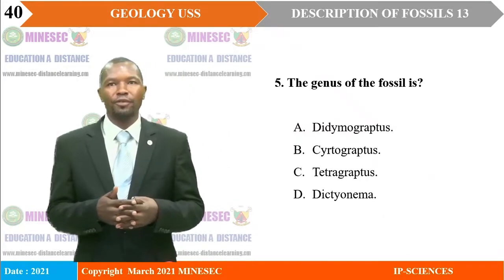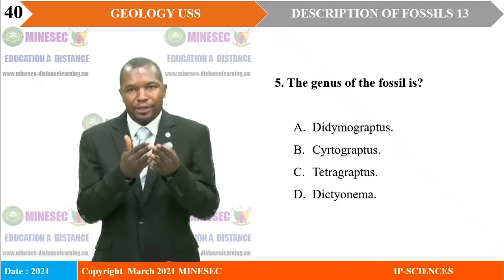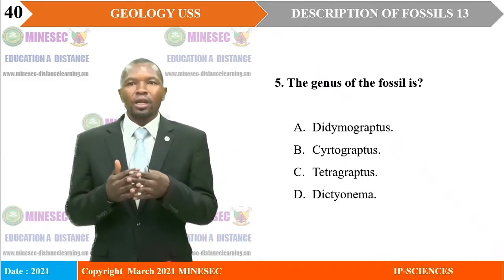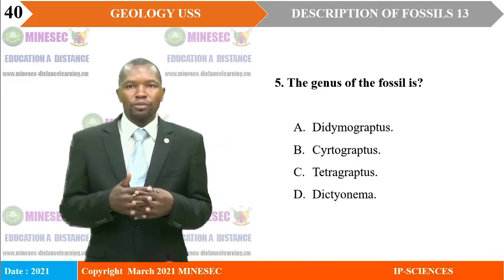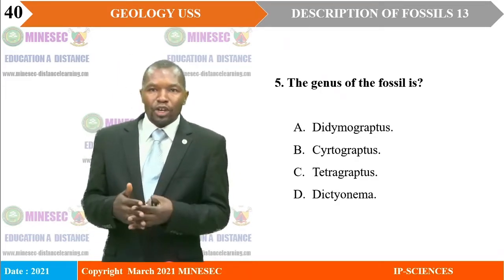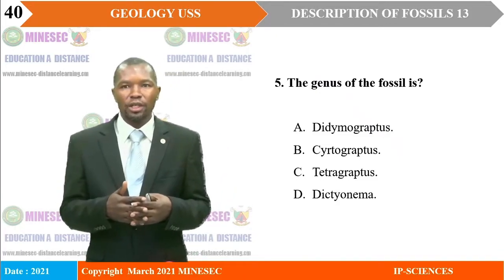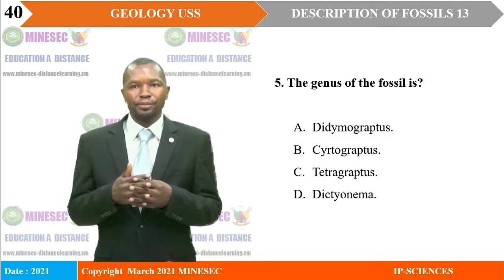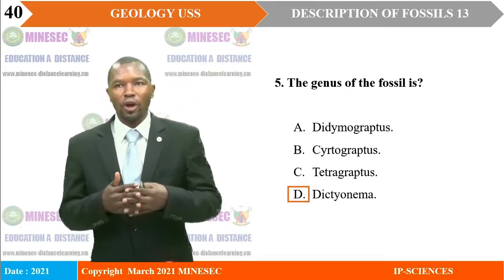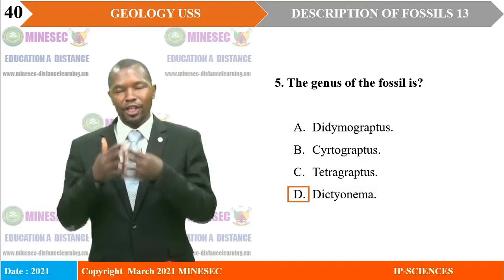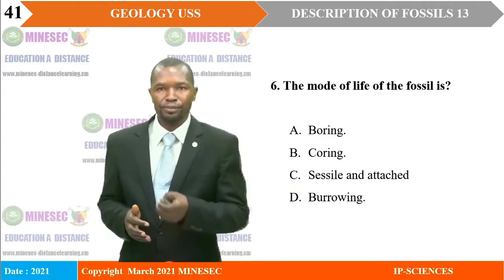Question number 5: The genus of the fossil is — that is, the fossil we have just been describing. A: Didymograptus. B: Cytograptus. C: Tetragraptus. D: Dithonema. Our correct answer is D — the genus of the fossil under dendroid graptolites is Dithonema. Number 6: The mode of life of the fossil is. A: Boring. B: Boring. C: Sessile and attached. D: Burrowing. The correct answer is C — the mode of life is sessile and attached.